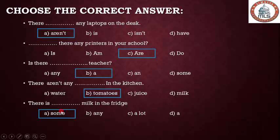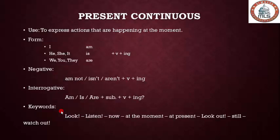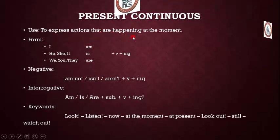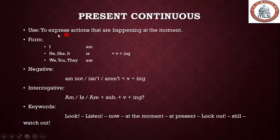The second part is about present continuous. We use it to express actions that are happening at the moment or now. The form: 'am/is/are' plus verb plus '-ing.' 'Am' comes with 'I'; 'is' comes with 'he,' 'she,' 'it'; 'are' comes with 'we,' 'you,' 'they.' Negative form: 'I'm not / isn't / aren't' plus verb plus '-ing.'